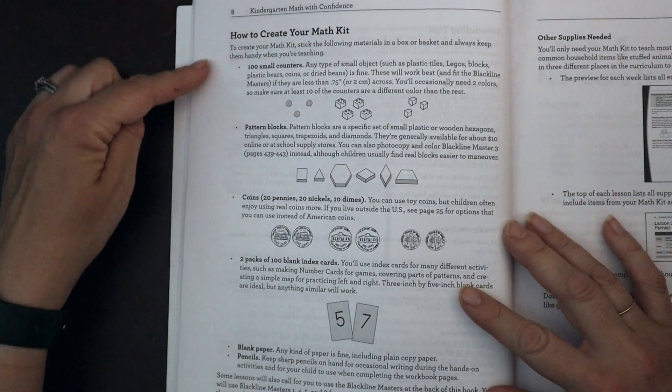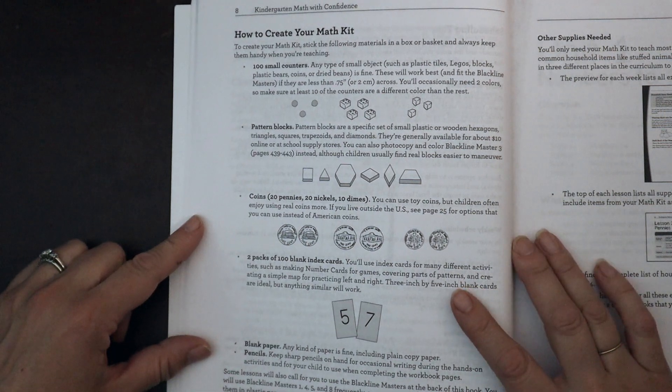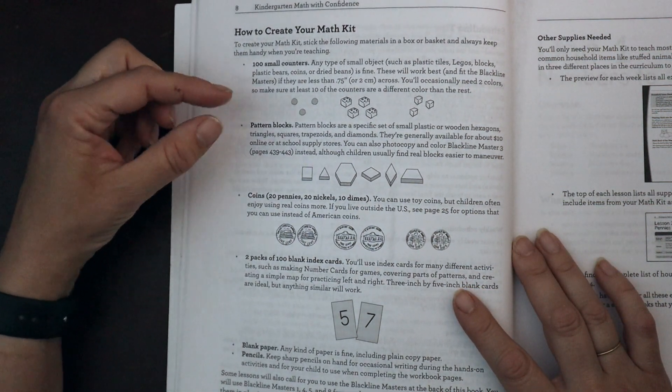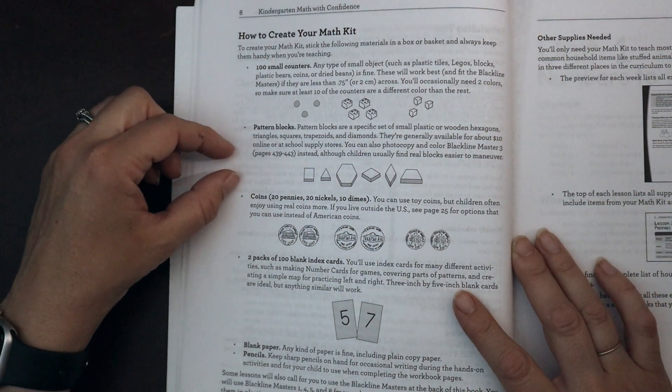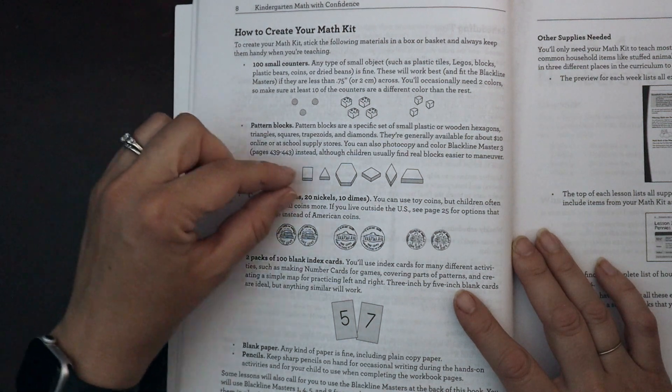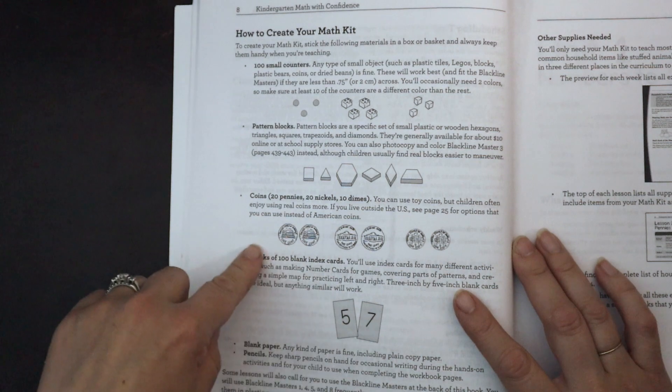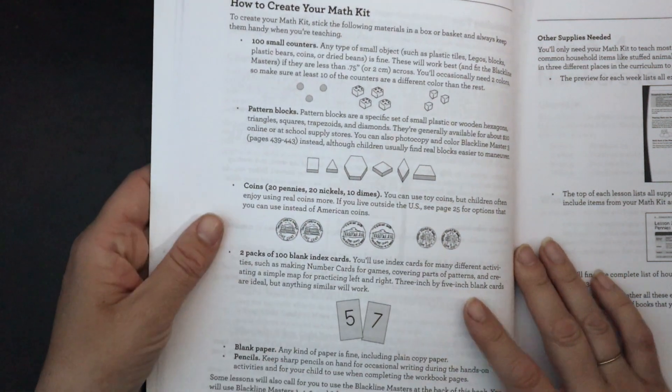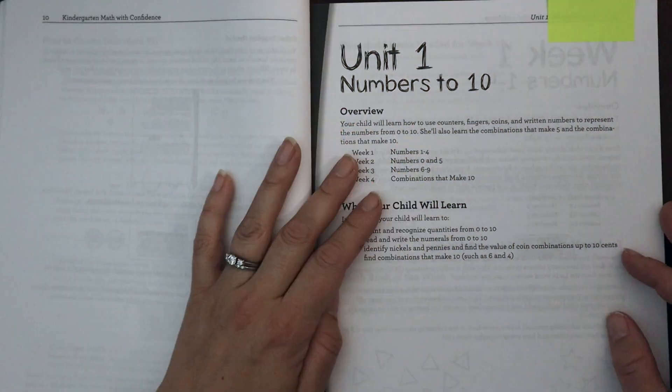Talks a little bit about scheduling and the materials that you're going to need. How to create your own math kit. So it talks about the different materials you might want to gather. So we need a hundred types of counters, a hundred items for counting. We need pattern blocks. If you do not want to purchase pattern blocks, they have a black line master that you can just print out some little blocks on cardstock. And then again, some coins and index cards.